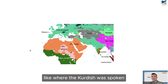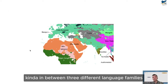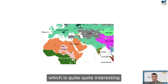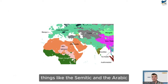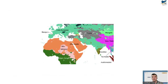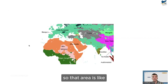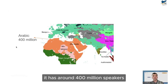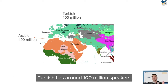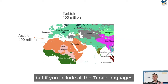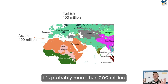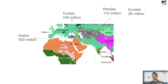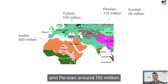Our region — where Kurdish is spoken — sits between three different language families, which is quite interesting. One is Afro-Asiatic, including the Semitic languages and Arabic. The second is Indo-European. The third is the Turkic languages. Arabic has around 400 million speakers. Turkish has around 100 million, but including all Turkic languages it's probably more than 200 million. Persian has around 110 million, including varieties like Dari in Afghanistan.